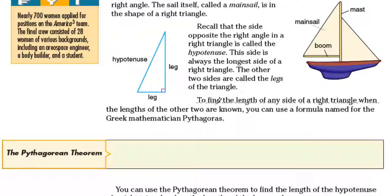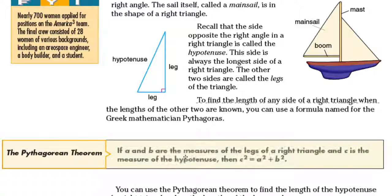To find the length of any side of any right triangle when the lengths of the other two are known, you can use the formula named for a Greek mathematician named Pythagoras. The Pythagorean theorem is simply this: if A and B are the measures of the legs of a right triangle and C is the measure of the hypotenuse, then C squared equals A squared plus B squared.